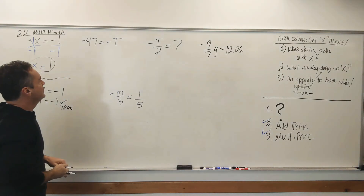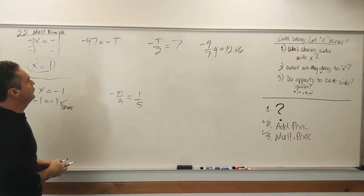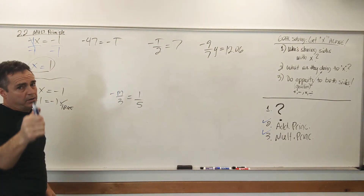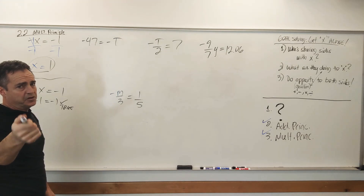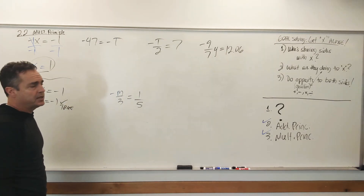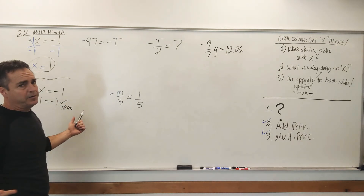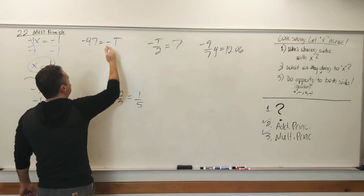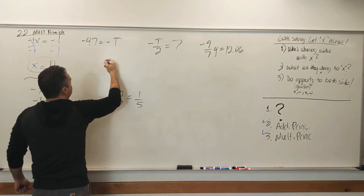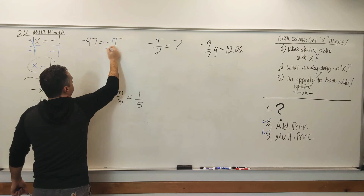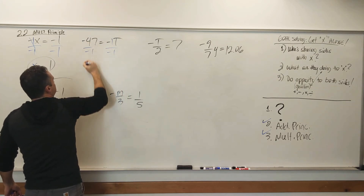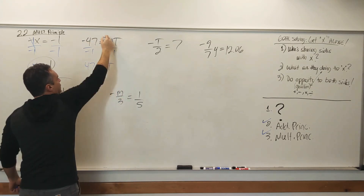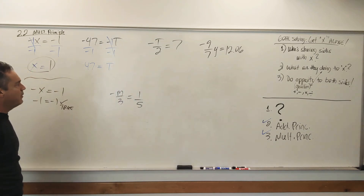Same concept: negative t equals negative 47. Negative is sharing sides with t, being multiplied. Divide both sides by negative 1. This becomes positive 47 equals t.